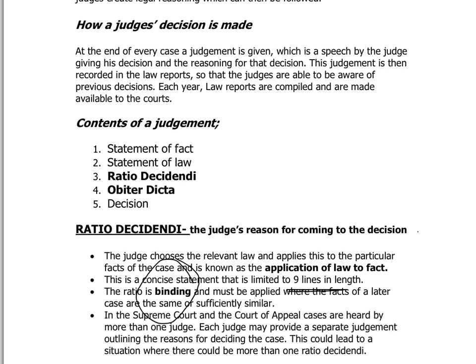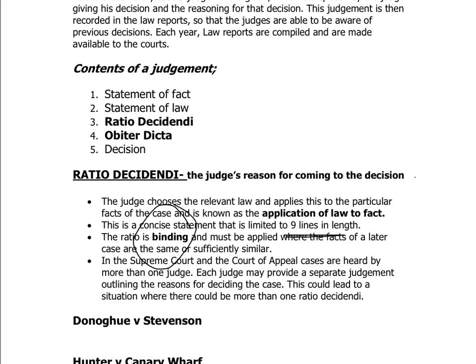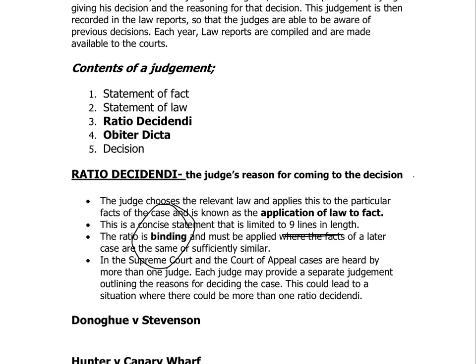The ratio can be anything up to around nine lines long, but it could be shorter. Remember: ratio means reason. If we're looking at higher courts such as the Supreme Court or Court of Appeal, there might be more than one ratio. For example, if five judges in the Court of Appeal have all agreed someone is guilty but each has a slightly different reason why, there are technically five different ratios. For the exam, you need a clear definition, some features, and most importantly your cases.